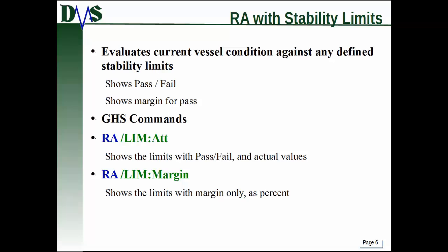Now let's talk about the really fun part: how to use the RA command to evaluate stability limits. You can do this with a pass-fail output or a margin output. There are two ways. You've got RA /LIM:ATT — ATT stands for attained. That will show the values the limit requires you to have, then show the values you've actually achieved, and then display a simple pass-fail. Or you've got the limit command with the margin option added on, which shows the limits with a margin only — it shows what your attained limits are as a percentage of what they should be.